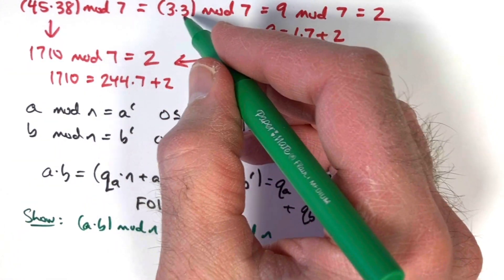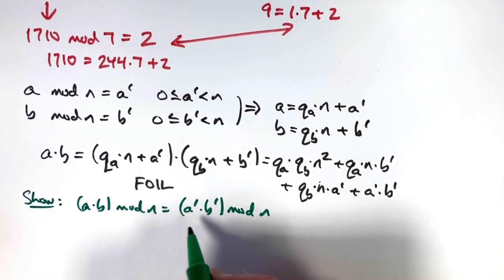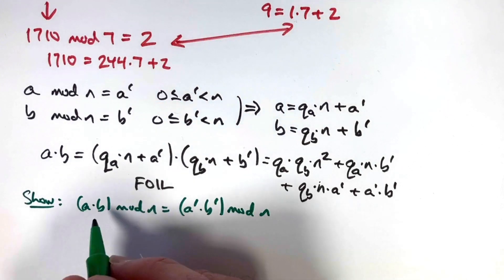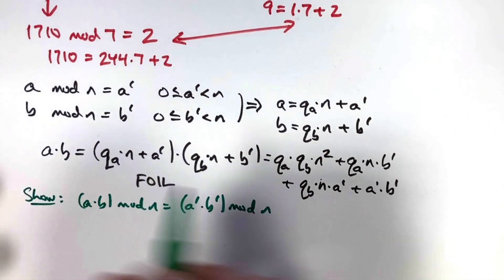Back in this example, both a prime and b prime were 3. Coming back down here, I'm trying to show that the remainder is the same in both cases when I divide both of these numbers by n. Can this expression help me do that? Yes, though it is tricky.